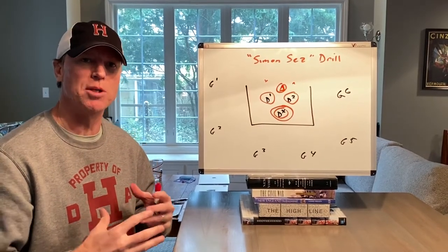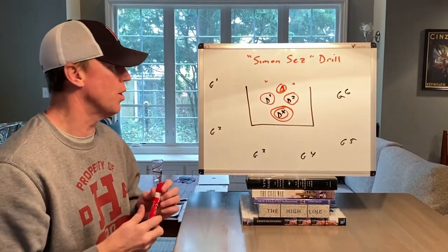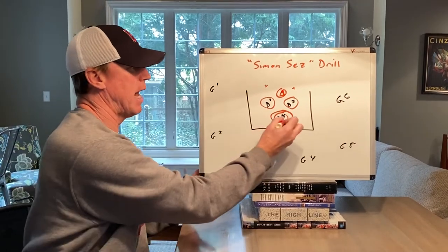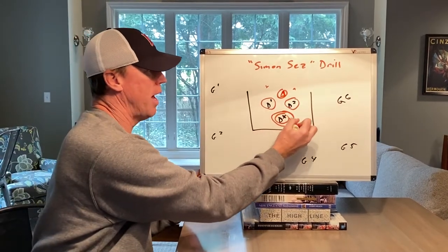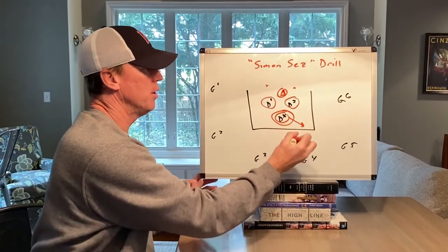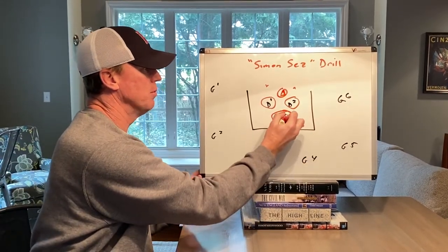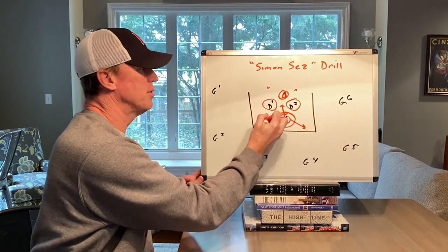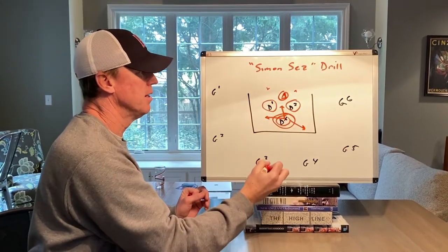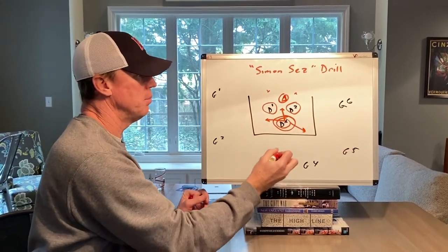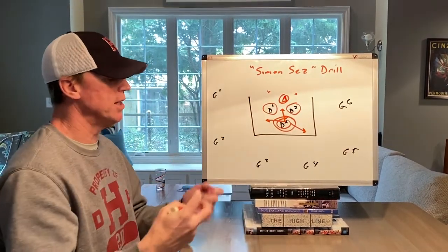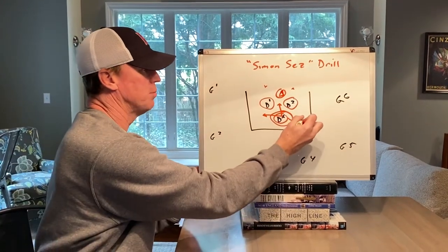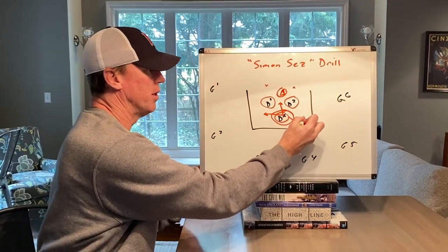So you might have D1 tell a guy to go to a slide, you might tell him to recover in front of the crease, you might send him to the back side. One of the ways you'll start this drill is: 'Hey, we're going to pretend the ball is here,' so everyone will know how to orient themselves relative to the ball.